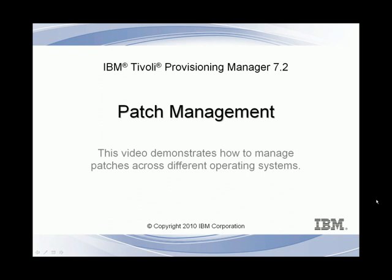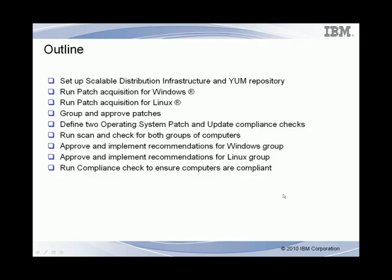This demonstration covers IBM Tivoli Provisioning Manager 7.2 Patch Management. First, we'll look at setting up the scalable distribution infrastructure and the repositories. Next, we'll do patch acquisition for Windows and Linux. Then, the patches will be approved. Next, we will run an operating system patch compliance check against a number of endpoints. Once that compliance check is run, we will look at the recommendations for both Windows and Linux, approve those recommendations, and run remediation of those compliance issues.